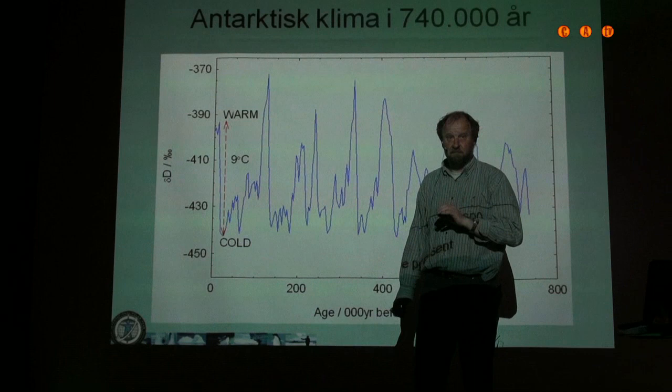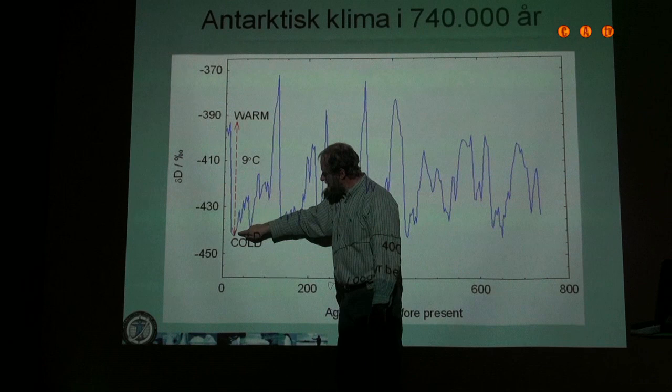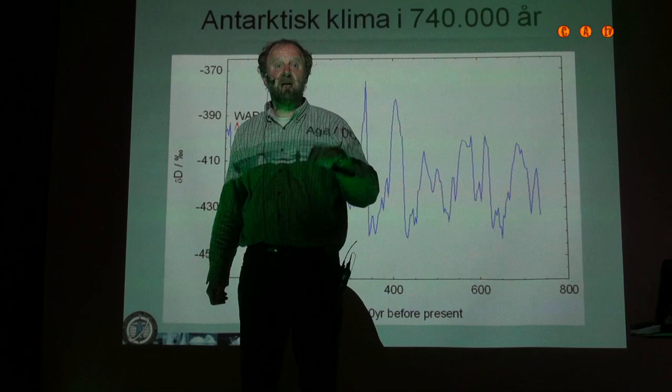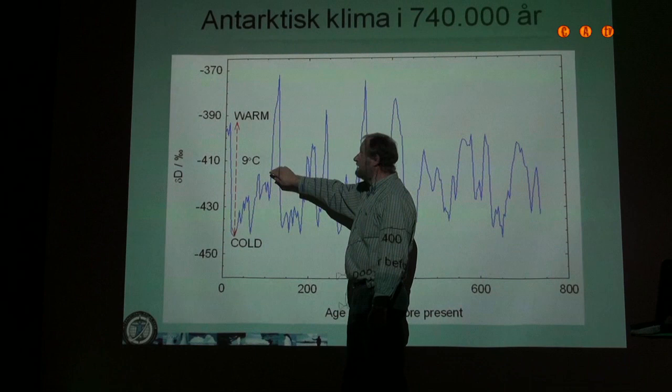Very rare. This big dip represents what we in Denmark call the last Ice Age. When the curve was down at the bottom 25,000 years ago, there was 400 meters of ice where we sit now. Copenhagen was ice-covered. The ice margin was 200 kilometers to the west, over by Lilibet.